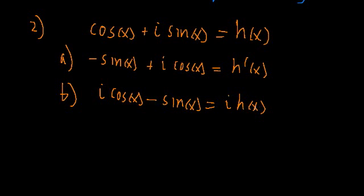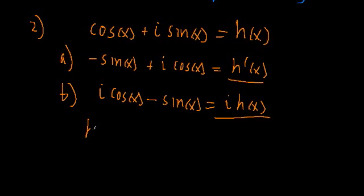Like before, we have two different expressions whose left-hand sides are equal — both give minus sine X plus I cosine X. That means by the transitive property these two things are equal, so we get that the derivative of H is equal to I times H of X.